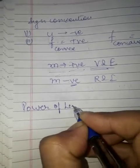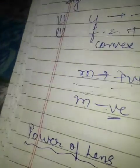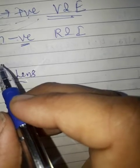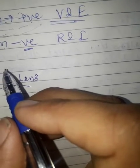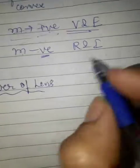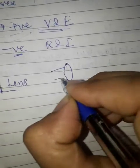The next topic is the power of a lens. When you write power, you are basically talking about someone's capability. The power of a lens represents the ability to converge or diverge light. A convex lens converges light rays — that is why it is called a converging lens.